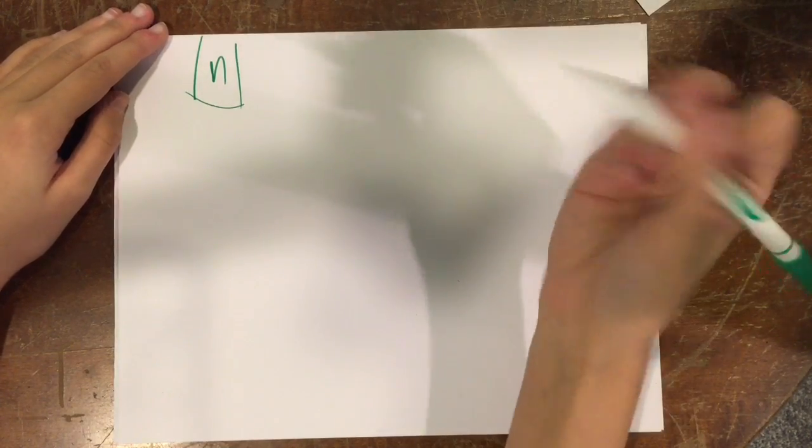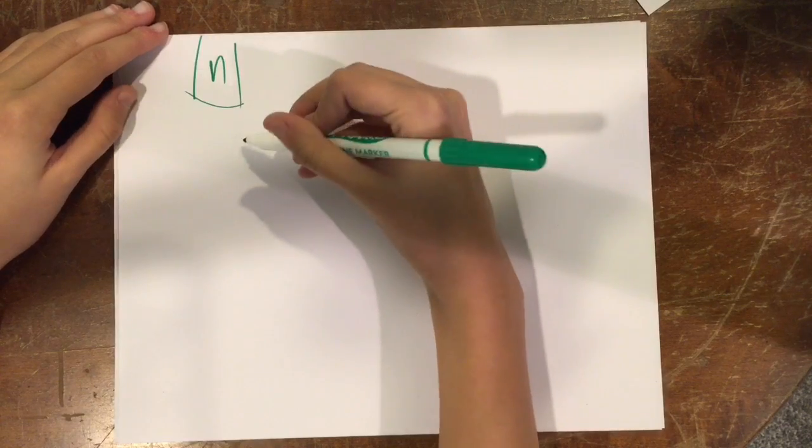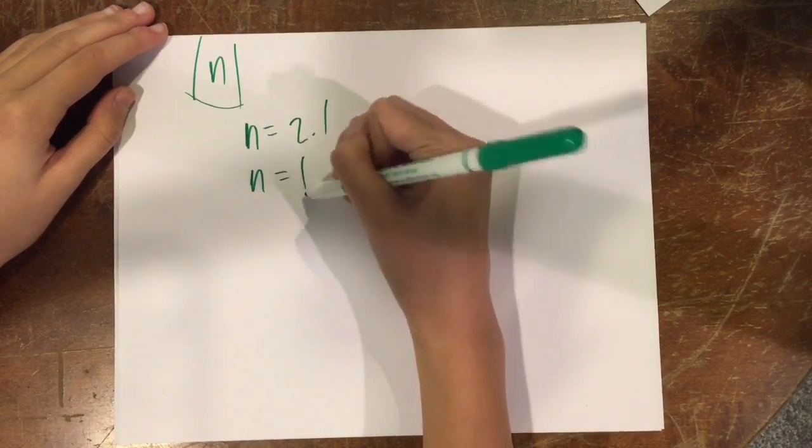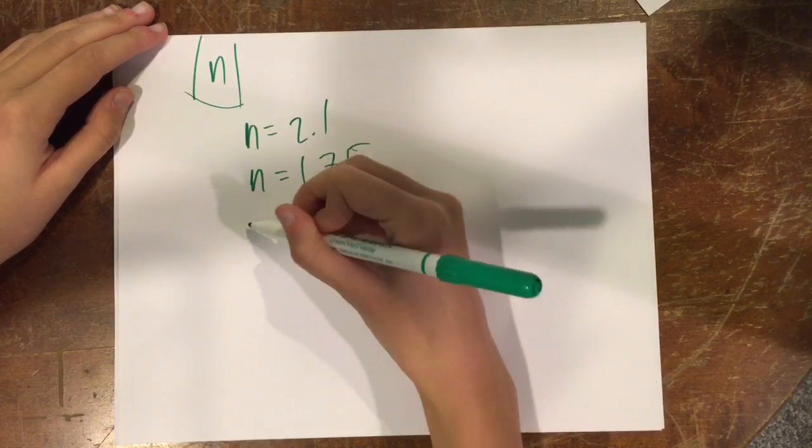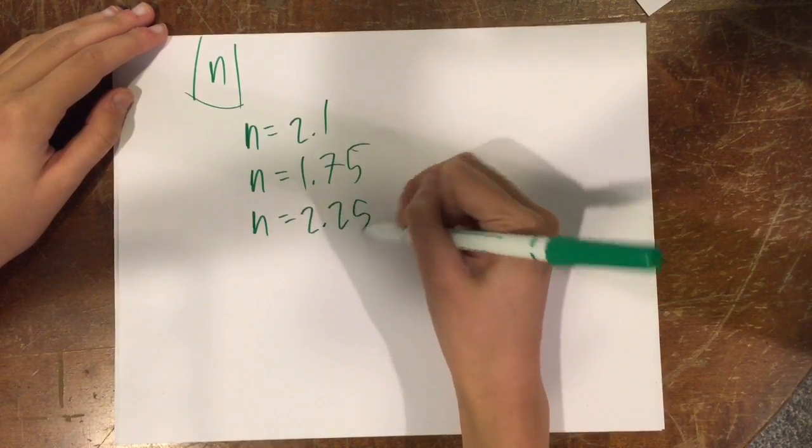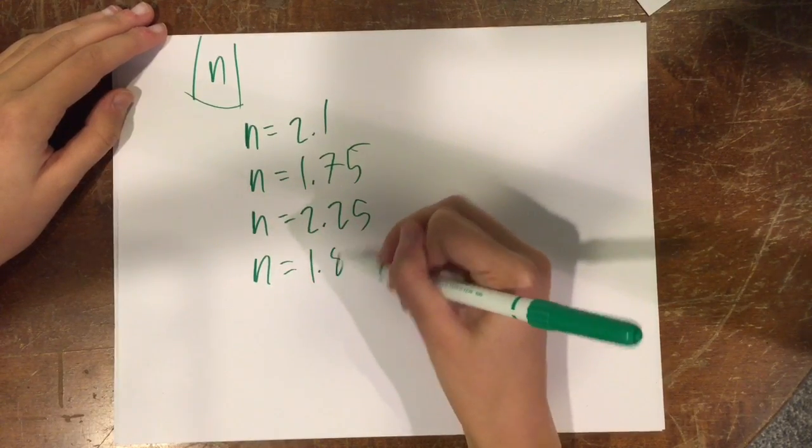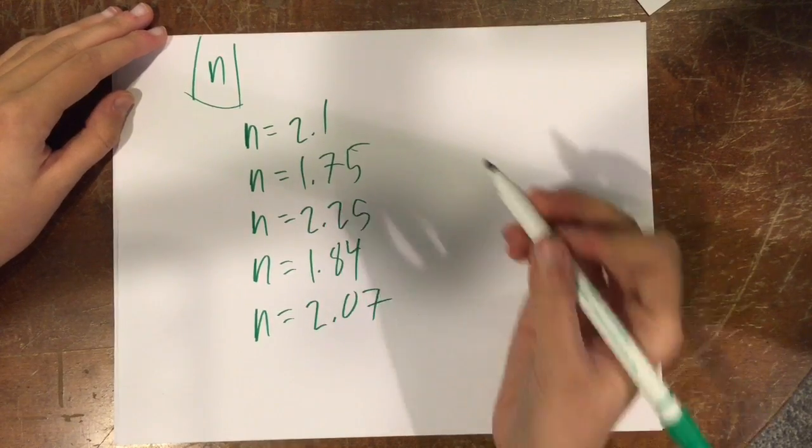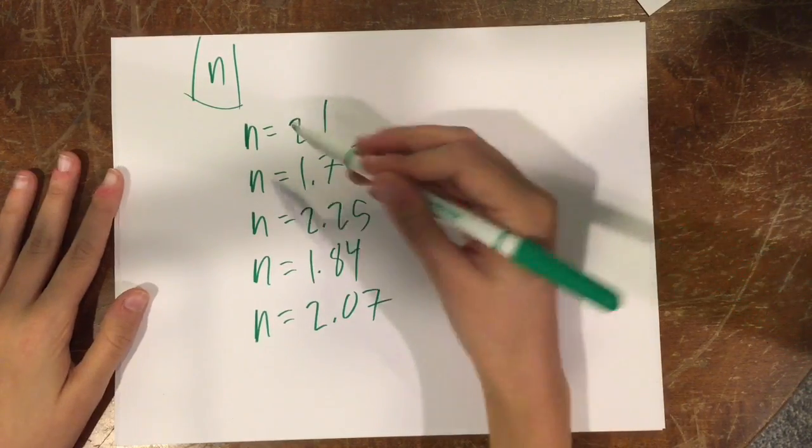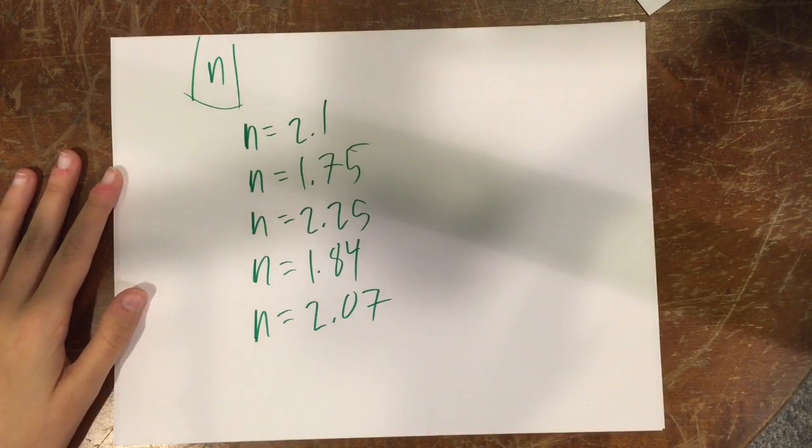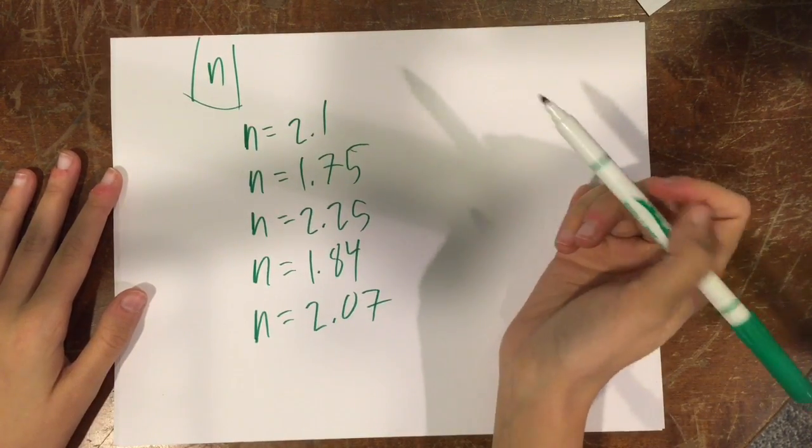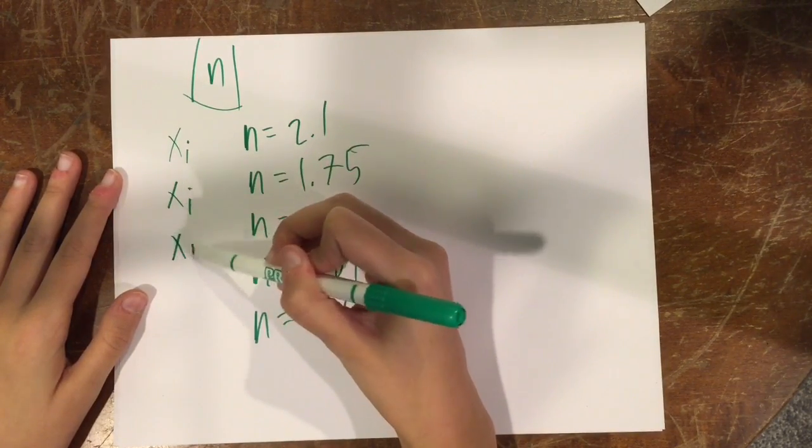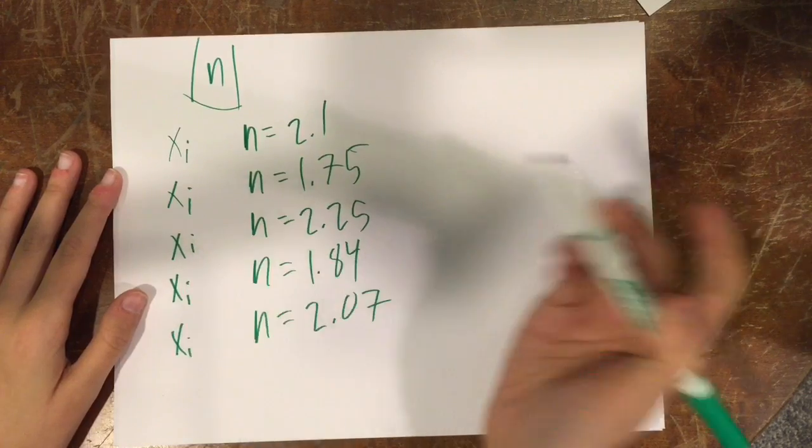So I'm going to make up just a set of numbers for N that you might have gotten from this experiment that we did. And if I had my lab notebook, I would take the real values I got, but it's currently being graded. So we're just going to go with these. So let's say these are all your different values of N you got for this experiment. Each one will correspond to this little xi, which is each individual data point.